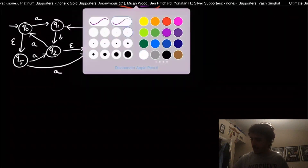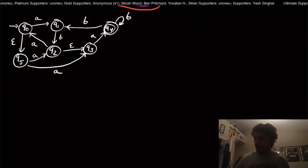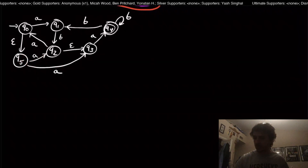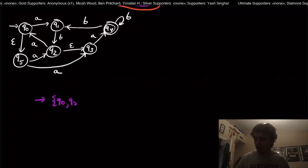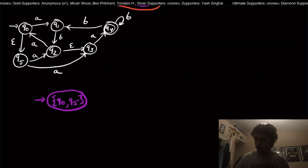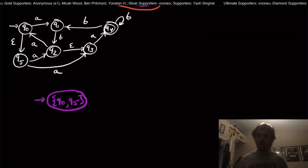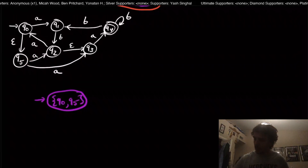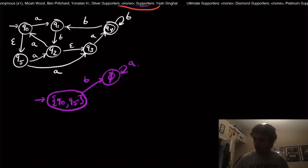Now let's make the DFA out of this modified NFA. The epsilon closure of the start state is not just q0 — it also includes q5, because there's an epsilon transition from q0 to q5. But q5 doesn't go anywhere else on epsilon. So the start state of the DFA is now {q0, q5}. On input B, q0 goes nowhere and q5 also goes nowhere, so we go to the dead state again.